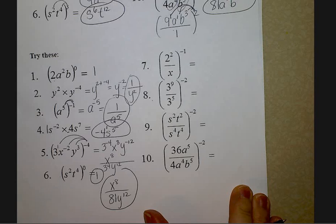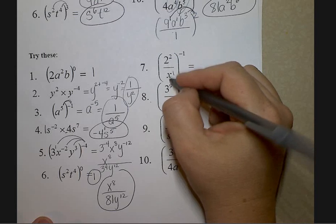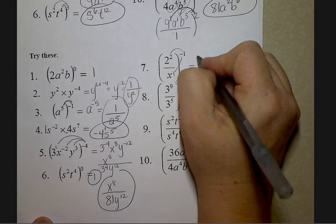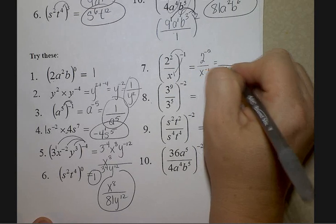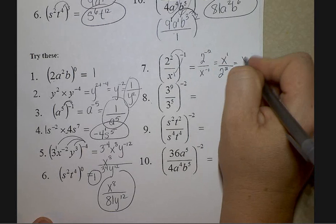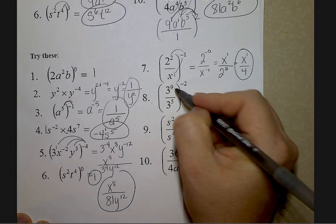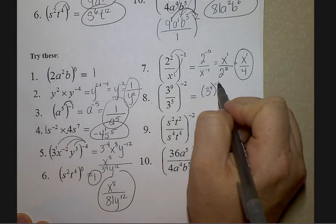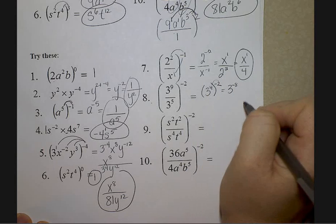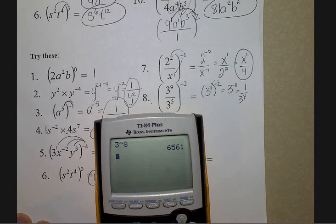Number six: anything to the zero power is one. Moving to the last four problems — number seven: the hidden exponent on x inside is one; I can't combine these because they're not the same base, so I distribute. When you distribute, you multiply: two to the negative two over x to the negative one. The two is not happy — comes down to the bottom; two squared on the bottom is four. X is not happy — goes to the top. Number eight: nine subtract five is four, so three to the fourth raised to the negative two. Distributing the negative two gives three to the negative eight; not happy, goes to the bottom. Three to the eighth is 6,561.